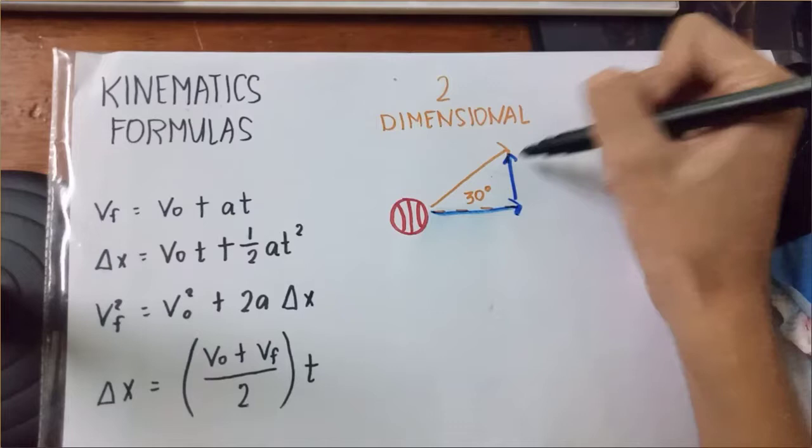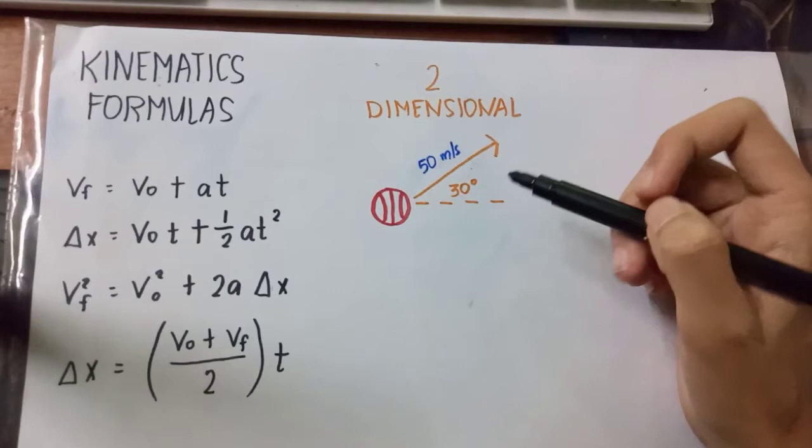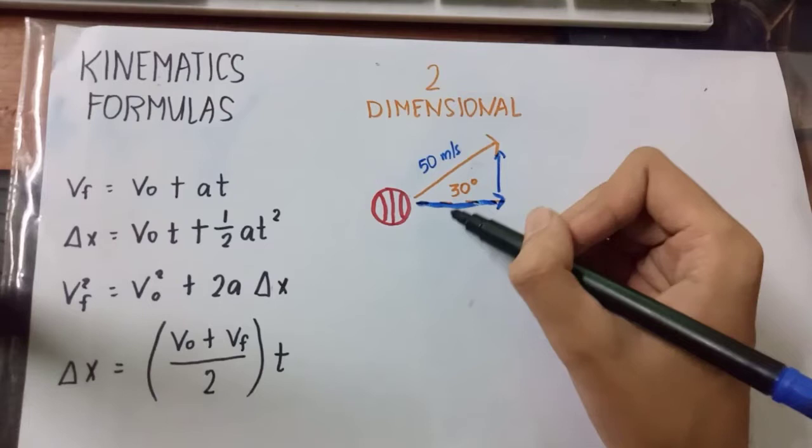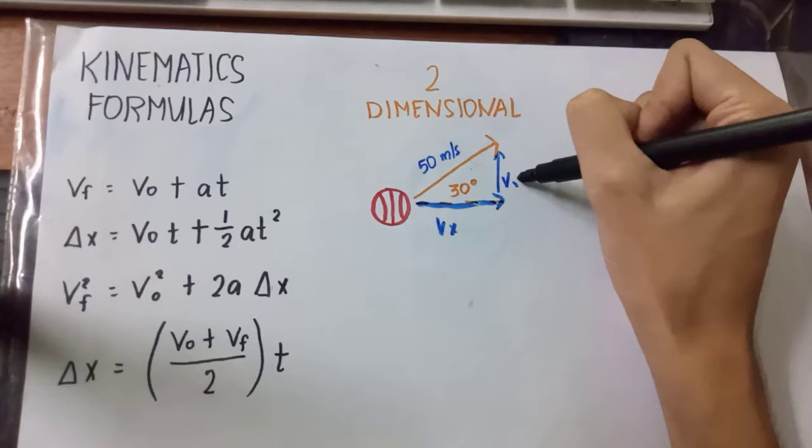At sabihin natin na ang bola na ito ay ibabato at ang kanyang bilis ay 50 meter per second. So, it's gonna have a horizontal component moving to the right and it's going to have a vertical component moving to the up. At tawagin natin ang horizontal component velocity in x direction and the vertical component y direction. So, ang ating gagamitin ngayon ay trigonometry or right triangle.